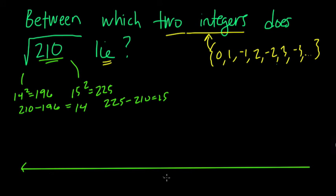So the negative roots, put 0 right in the middle. Let's say here is 14. And here is 15. And, again, it's a little bit closer to 14. That's the positive root of 210.